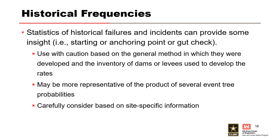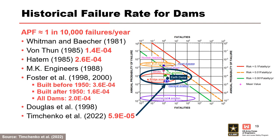Teams must carefully consider whether the population of dams or levees used is appropriate for the specific project being evaluated — for example, embankment and foundation materials, loading history, operations, etc. Dams have failed at a rate of about 1 in 10,000 per dam year of operation depending on the potential failure mode and age of the structure. This can form the basis for evaluating failure likelihood for a given potential failure mode under normal operating conditions. The failure rate in the University of New South Wales database after 1950 is about half the rate before 1950. For a specific dam, think about factors that make a potential failure mode more or less likely to occur than this historical rate.